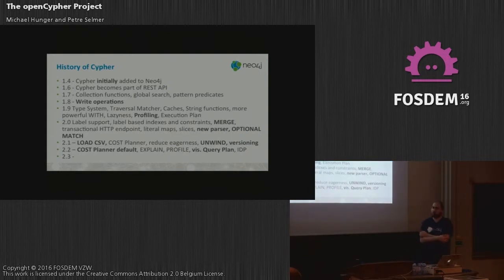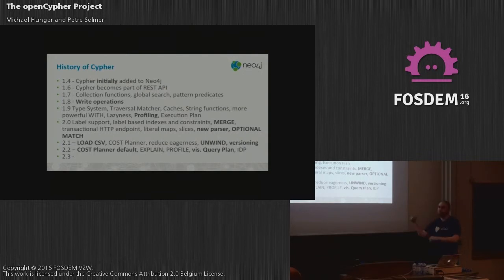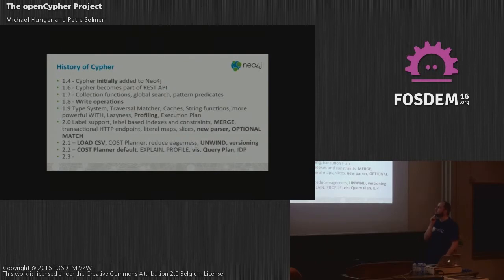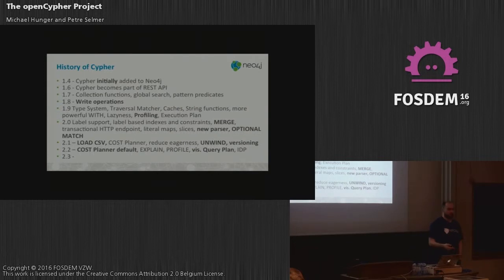The history of Cypher: we started about three years ago. The first version was read-only queries with a primitive query planner that just went left to right through the query. Then we added it to our server API and connection functions. In Neo4j 1.8, about two and a half years ago, we added write operations, which required controlling the visibility of changes — because if you match something while creating at the same time, you have to watch out for leaking create operations into the match. So we had to add some eagerness handling.